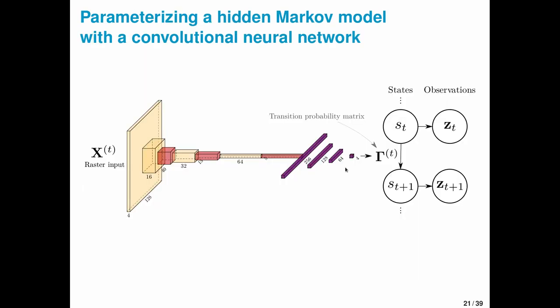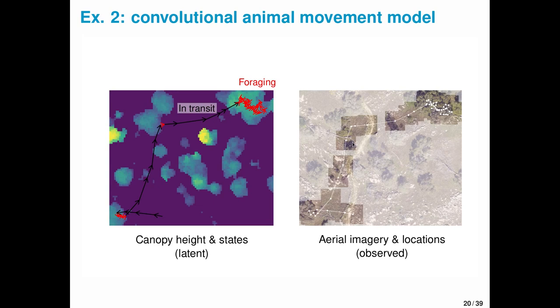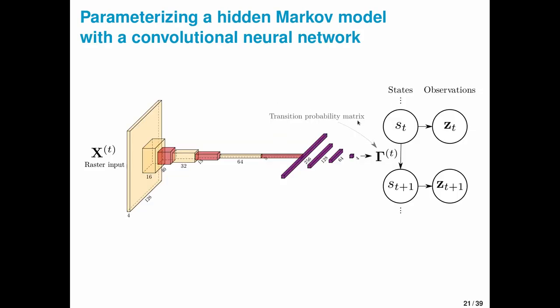Of course we could if we parameterize a hidden Markov model using a convolutional neural network that maps raster values to input, essentially just these image chips, to state transition probability matrices. Then we can do this, right? And this state model tracks the time evolution of behavioral states and the observations relate to the movement trajectory.